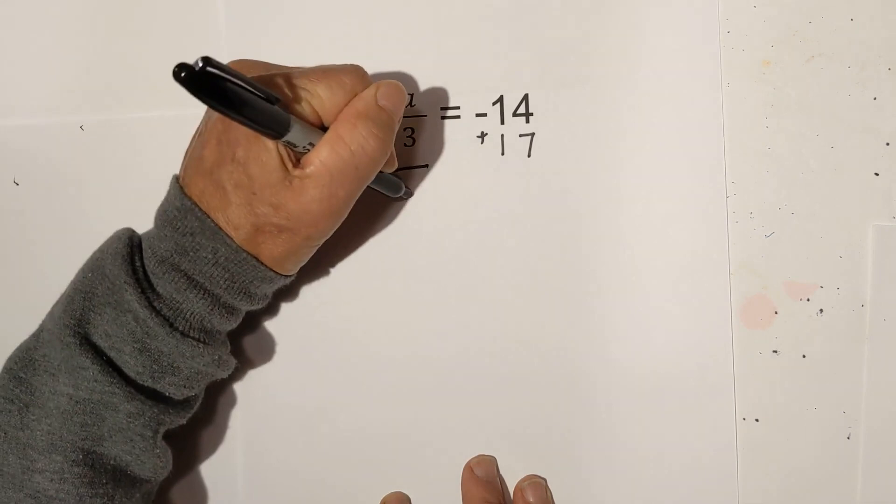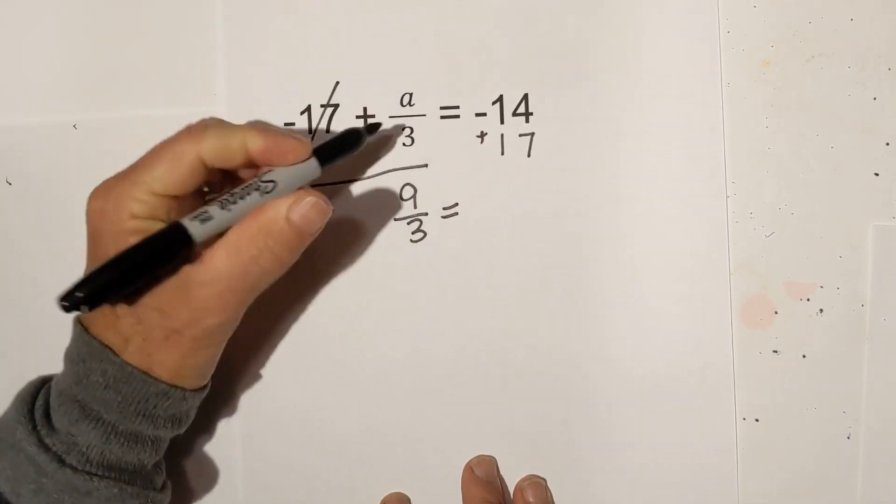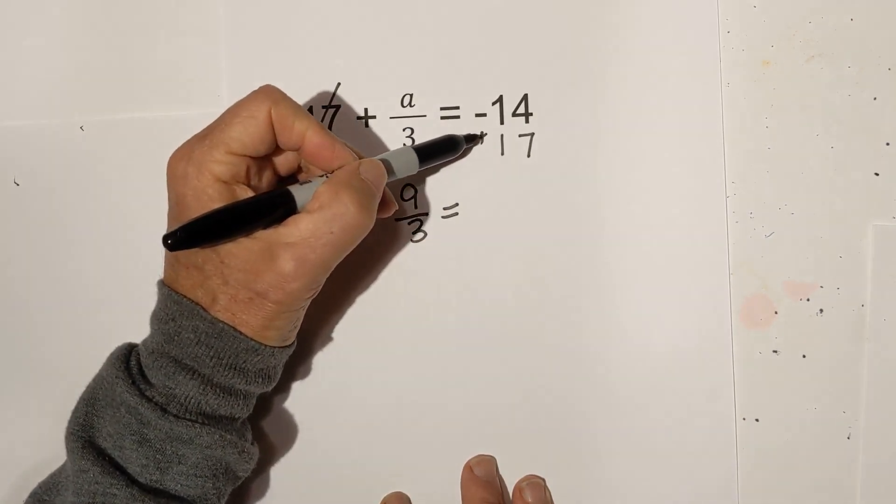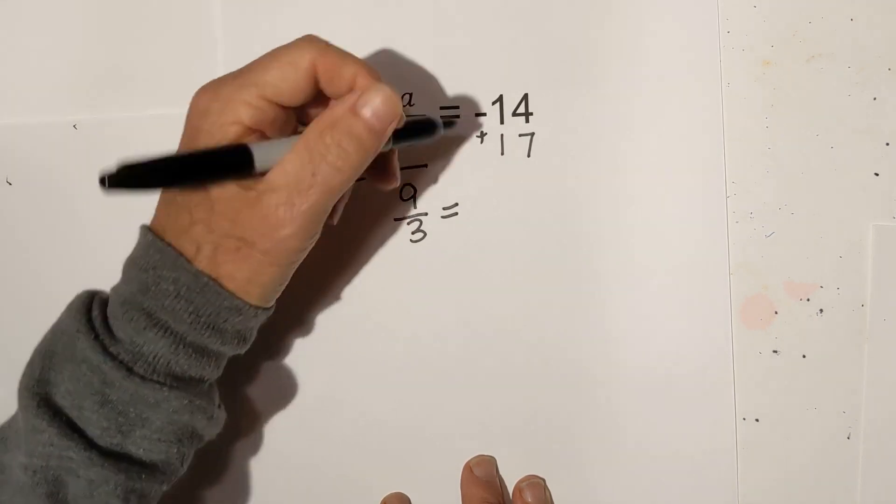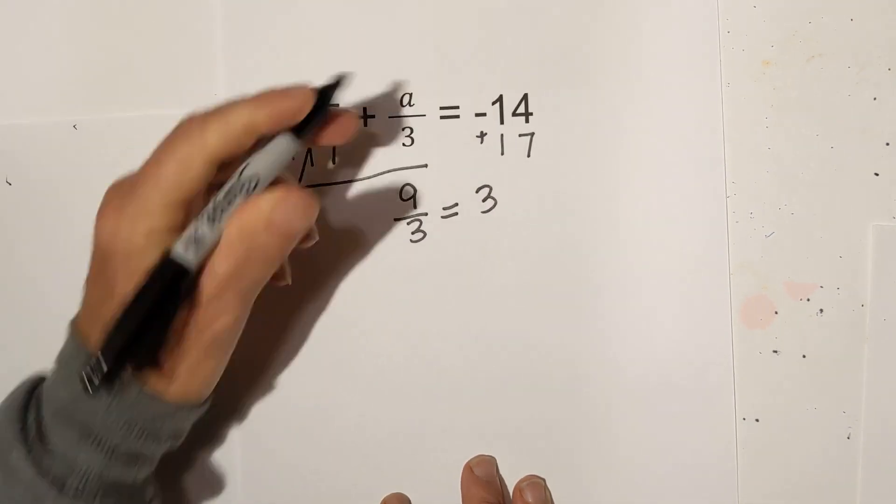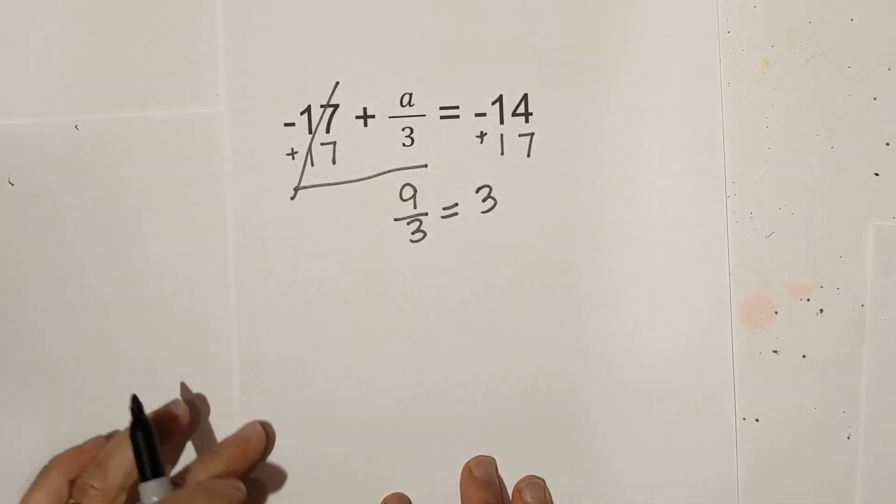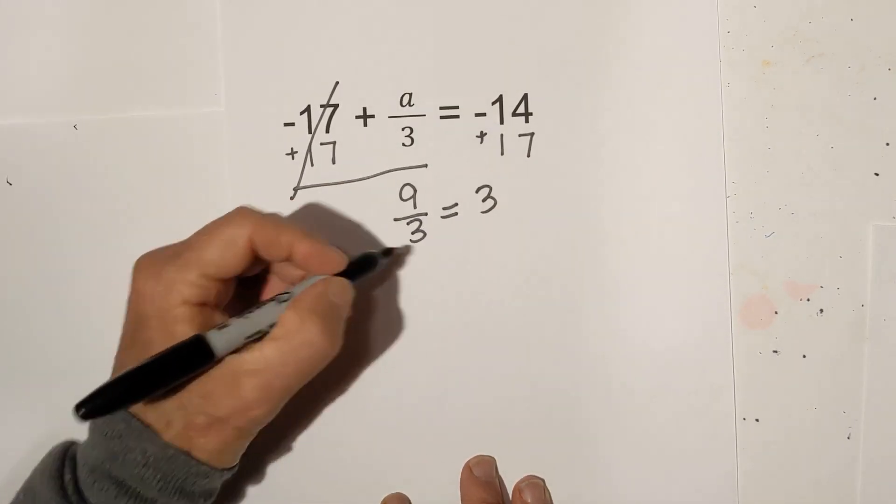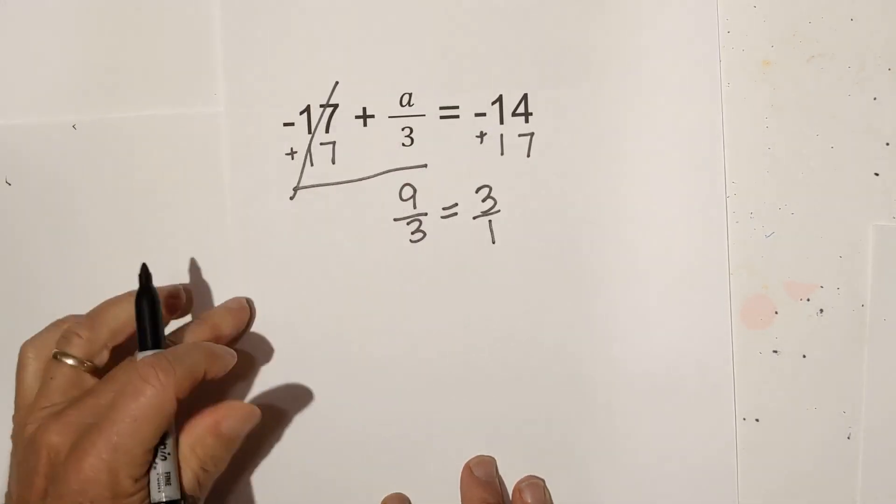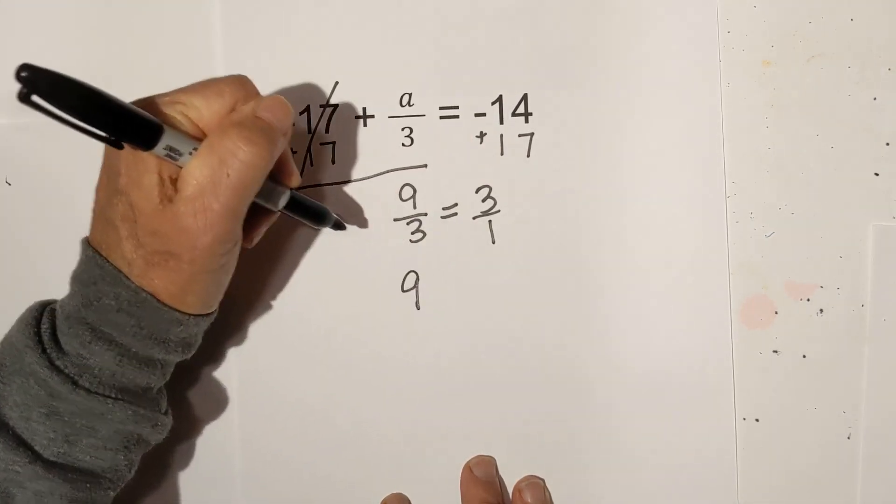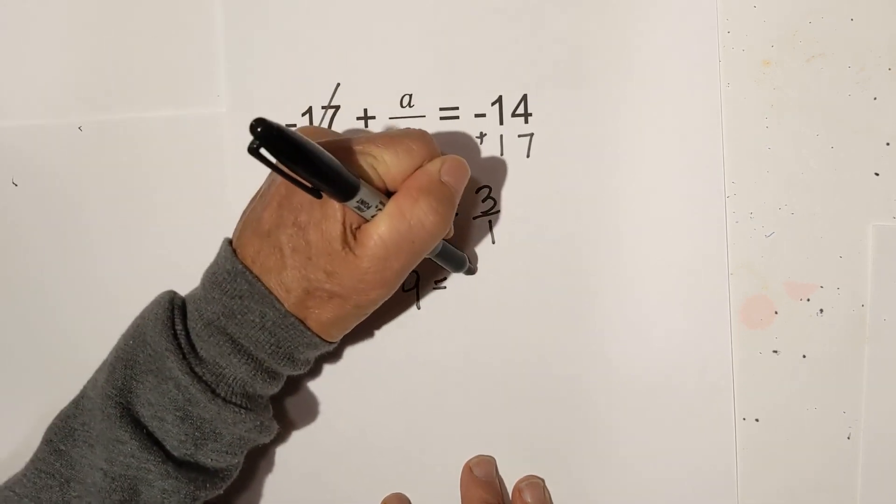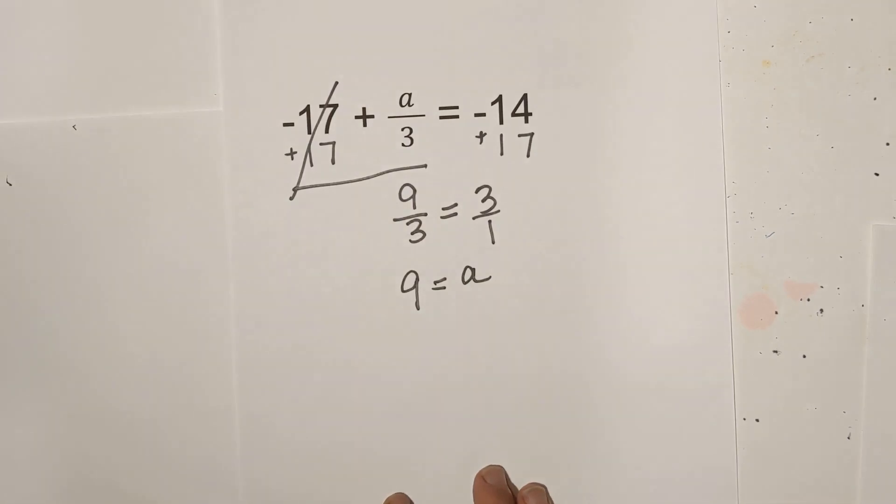These cancel. So you have a over 3 equals a positive and a negative. Remember, you keep the sign of the larger number. You subtract, keep the sign of the larger number. So that would be a positive 3. Now, remember the rule from last time. We have a fraction and just a number. So I'm just going to place this over 1. I'm going to cross multiply. 9 equals, and that looks like a 9, that's actually an A. So A is equal to 9.